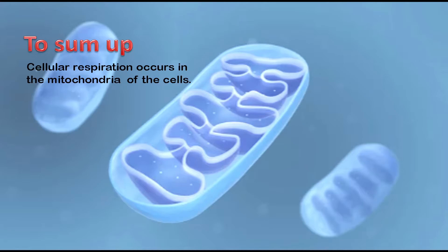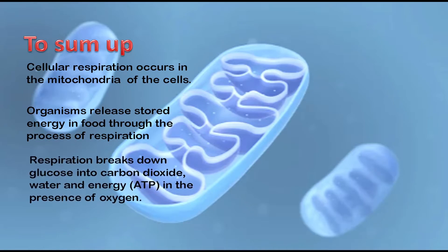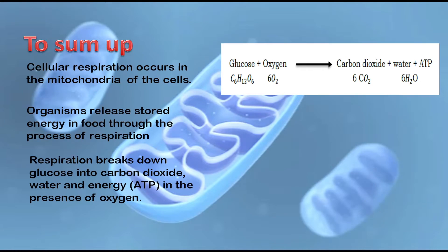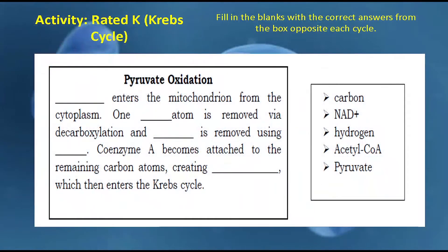To sum up, cellular respiration occurs in the mitochondria of cells. Organisms release stored energy in food through the process of respiration, which breaks down glucose into carbon dioxide, water, and energy in the presence of oxygen. In equation form: glucose plus oxygen produces carbon dioxide, water, and ATP. The breakdown of glucose involves three major steps: glycolysis, the Krebs cycle, and the electron transport chain.